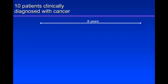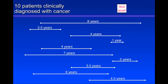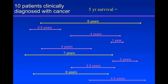Now imagine how this plays out in a group of patients. Here are 10 patients clinically diagnosed with cancer. This patient is diagnosed and lives 8 years before dying; this patient dies 2.5 years later; this patient dies 4 years later — and so on. Each arrow represents one patient. What's the 5-year survival of this group? The challenge is simply to recognize which arrows are longer than 5 years. There are 3 of them. So 5-year survival is 3 over 10 — 30%.